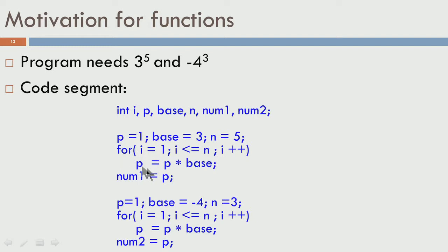Looking at this code, we have duplicated effort — the same for loop is written twice. If for some reason a mistake is made in one loop, the same mistake could appear in the other. Even if written correctly, it is the same task repeated over and over in the program. That is one problem.